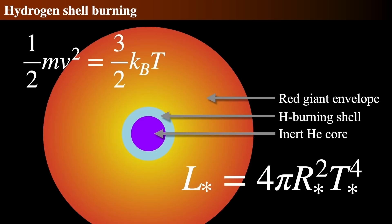So what is this shell burning, and why does it increase the luminosity? As the Sun runs out of hydrogen, there's less fuel in the volume of the star's core where fusion can occur.